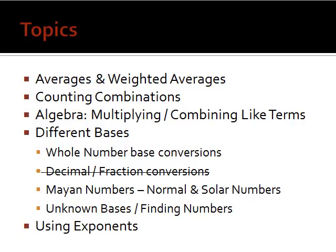Okay, so here are some of the things that are on the test: averages and weighted averages, counting combinations, algebra multiplying and combining like terms, different bases where we're converting numbers from base 10 into another base and vice versa. However, there won't be any decimal or fraction conversions on the test. Chapter 11 was about Mayan numbers. There are two different types of Mayan numbers, the normal numbers and the solar numbers. Chapter 13 was about exponents. So, that's a quick overview. Let me go through each of these in detail.